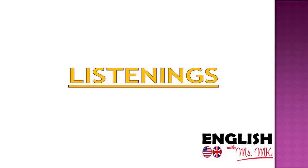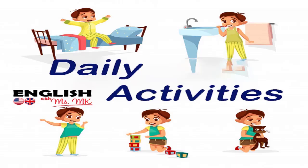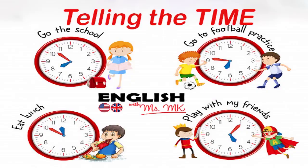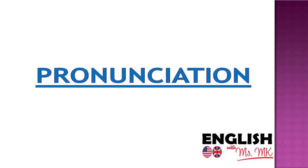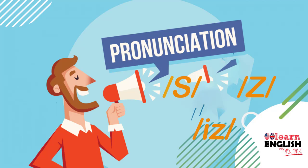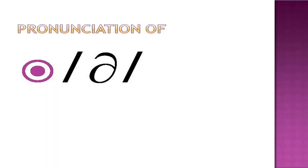For listening, we're going to have three listenings: one about daily activities, one about time, and one about leisure activities — three listenings are enough. Pronunciation is a sub-skill and should be integrated in a listening, grammar, or reading lesson. The pronunciation lessons we have are: the pronunciation of 's,' 'z,' and 'iz'; the pronunciation of the schwa; and 'h,' which was supposed to be taught but has been removed.